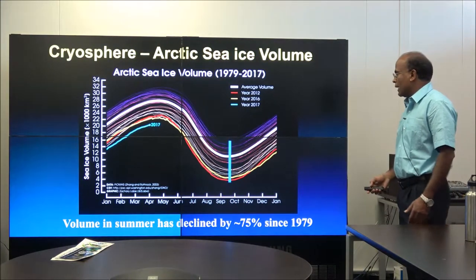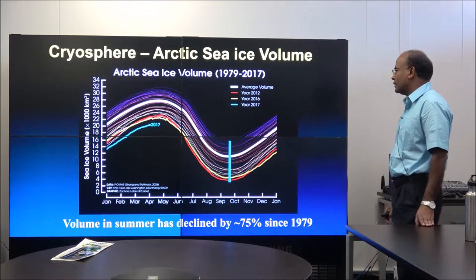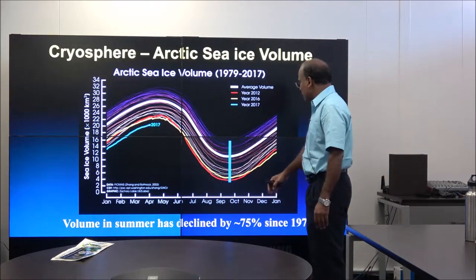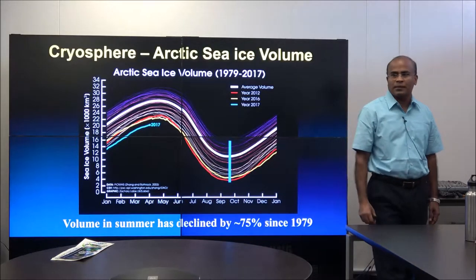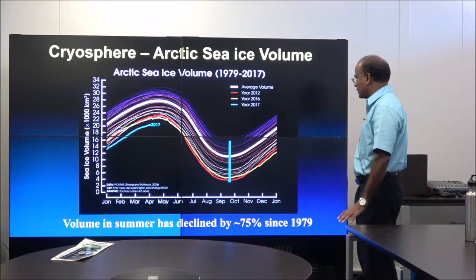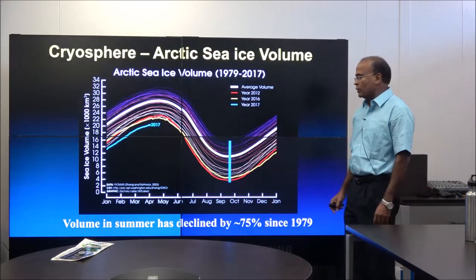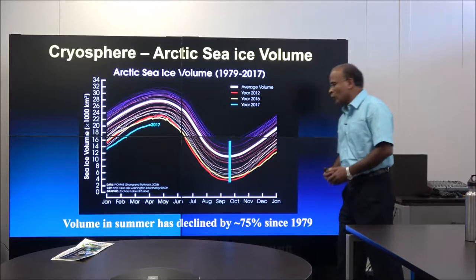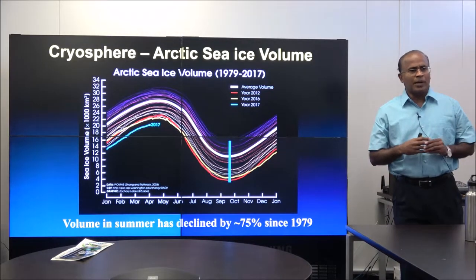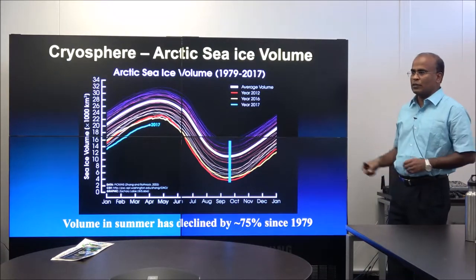This data comes from satellites. It shows the seasonal cycle in Arctic sea ice volume — 2017 is marked here. People typically look at sea ice extent as well as volume at the end of summer. Since satellite measurements began in 1979, 75% of the ice volume has been lost. You may have heard that 50% of the ice is lost — that refers to areal extent, but this metric also includes thickness.